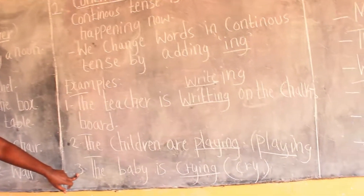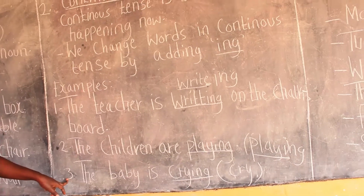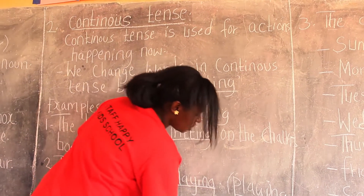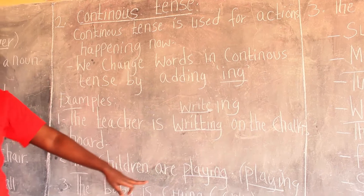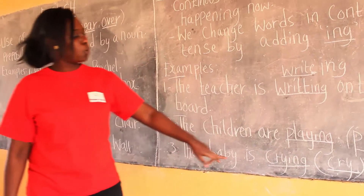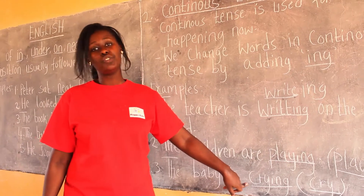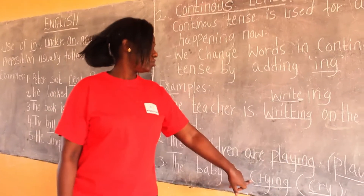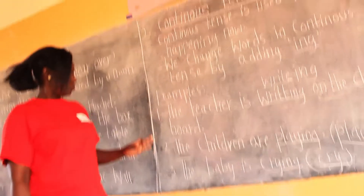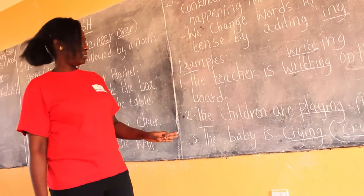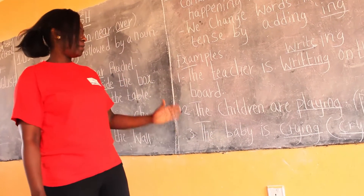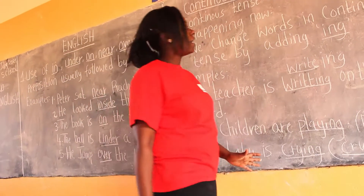Now we have example number three: the baby is crying. Which word did we use? We used the word 'cry.' We are going to change it into continuous tense. When we change it into continuous tense, we add I-N-G. The baby is crying. What is happening? The baby is crying.